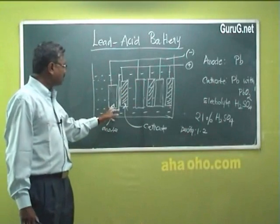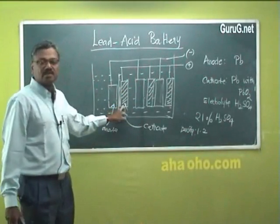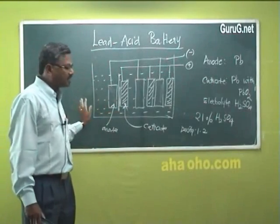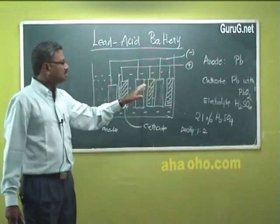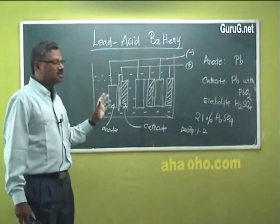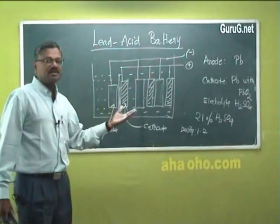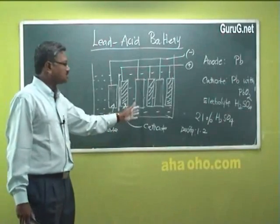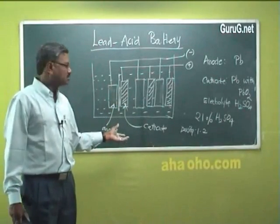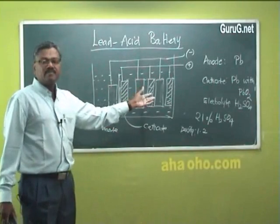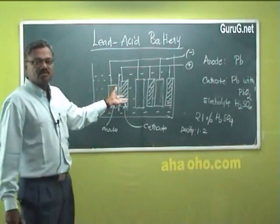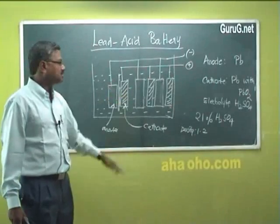When you have one anode and one cathode it is a simple electrochemical cell. Here we have arranged three electrochemical cells, which is why it is called a battery. A battery is a combination of different electrochemical cells — you can use three sets or four sets depending on your requirement. With three sets, you may get about 4.5 volts.